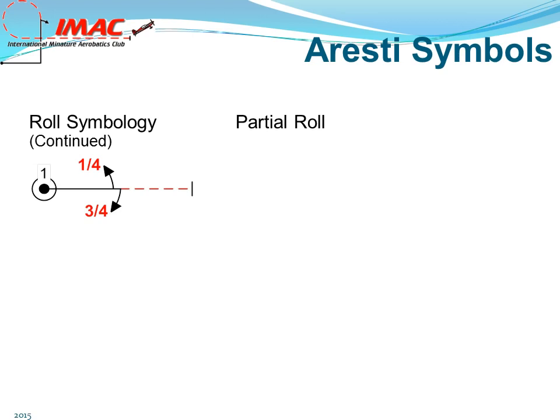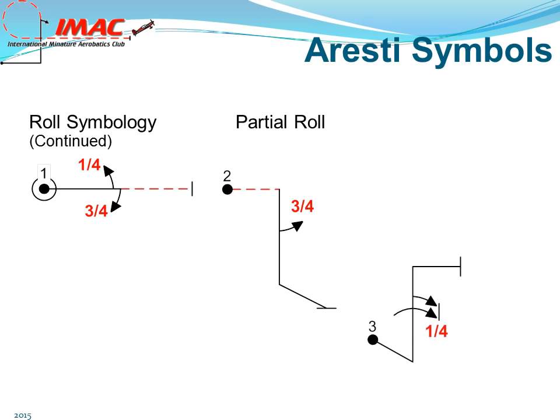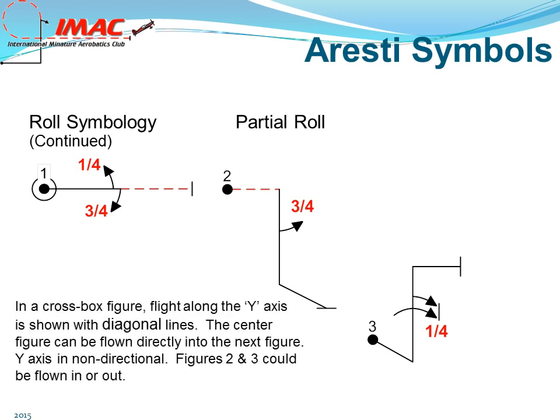Partial rolls are notated by the fraction. Figure one is a one-quarter roll followed by an opposite three-quarter roll. Figure two is a downline with a three-quarter roll, pulling to a cross-box or Y-axis exit. Figure three is a vertical upline with an upright exit on the X-axis. In a cross-box figure, flight along the Y-axis is shown with diagonal lines. The center figure, figure two, can be flown directly into the next figure. The Y-axis is non-directional; figures two and three could be flown in or out.